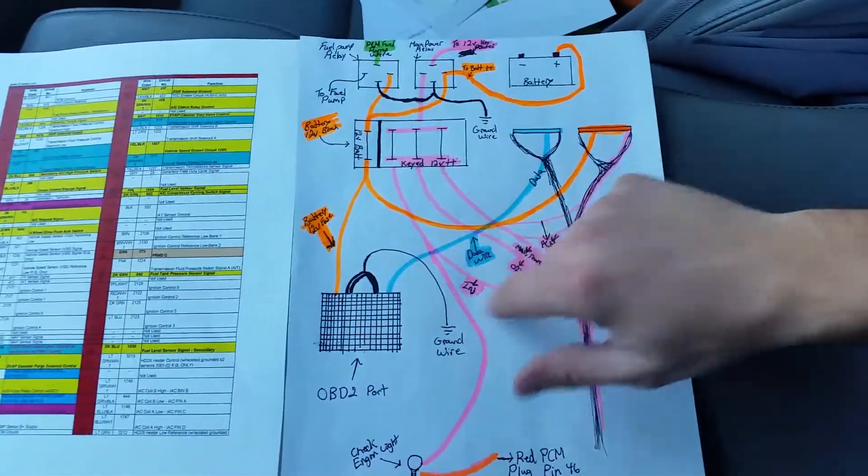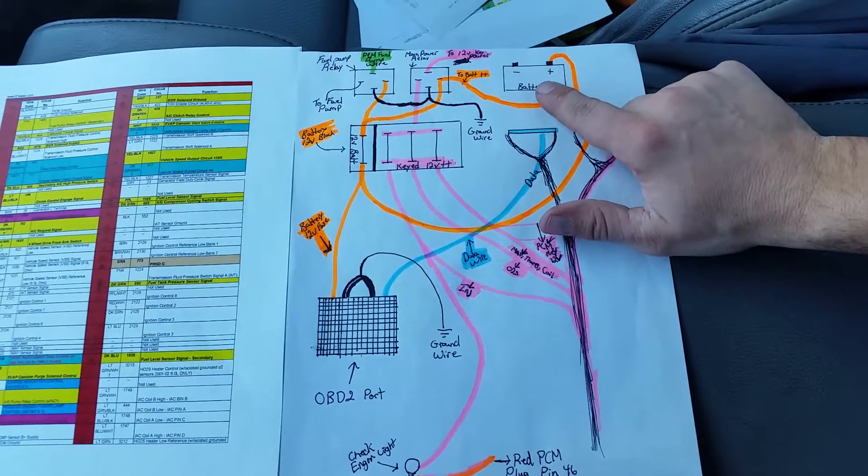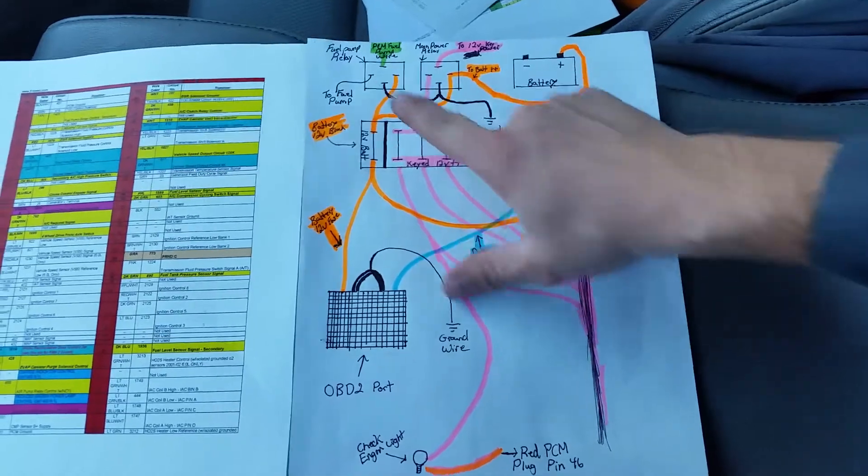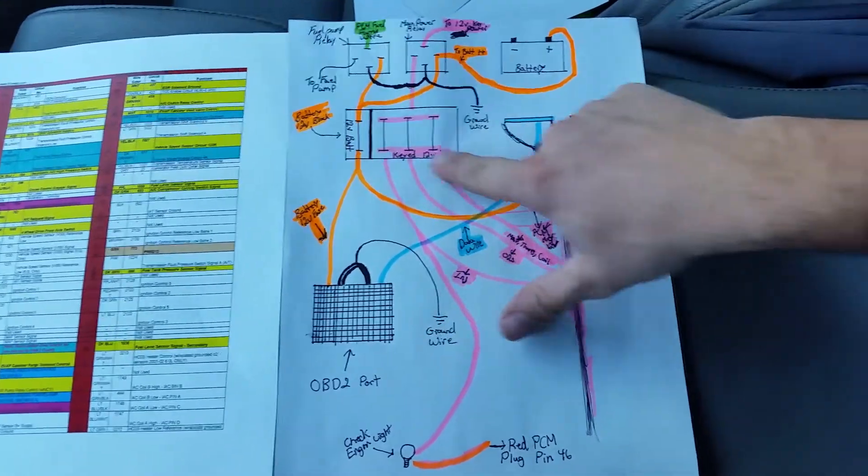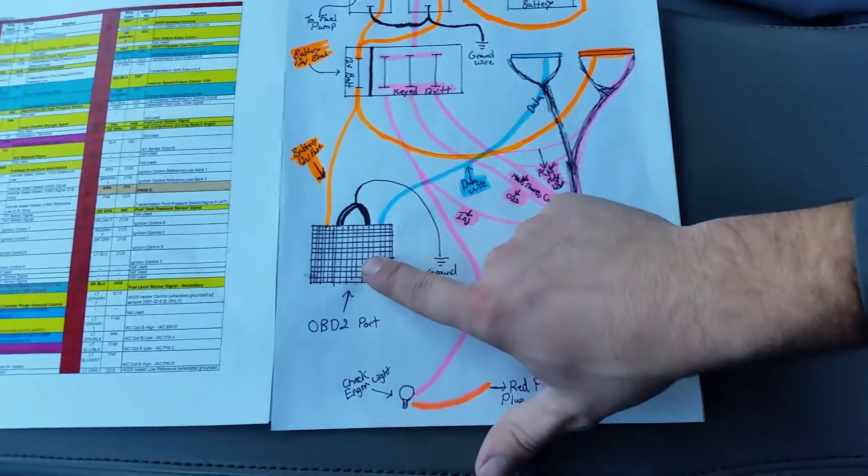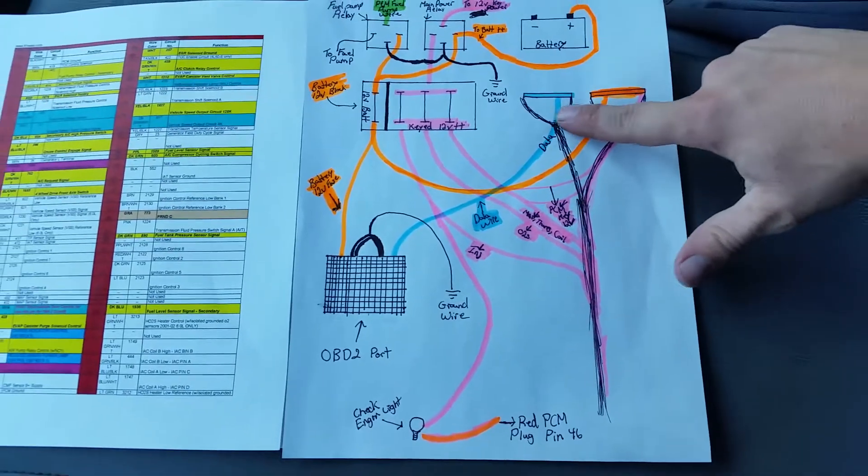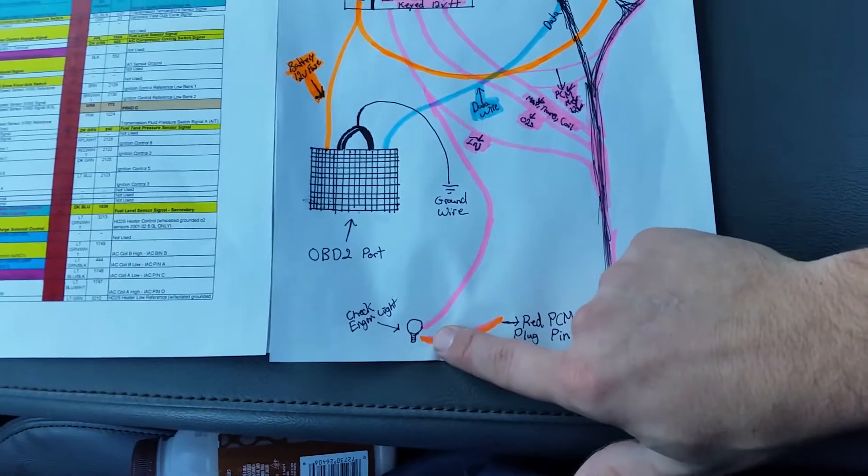This is your battery, this is your main power relay, this is your fuel pump relay, this is gonna be your new fuse box, this is the ODB2 port, these are the two connectors that hook up to your PCM, and this is gonna be your check engine light.